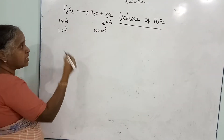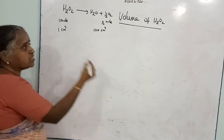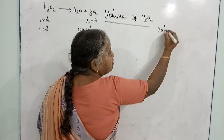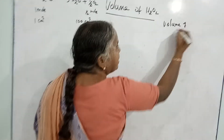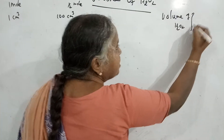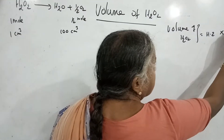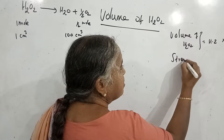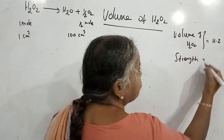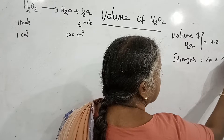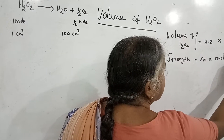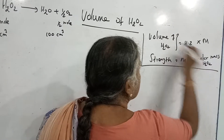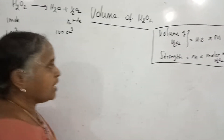This is the knowledge within the equation. The formula for this is: Volume of hydrogen peroxide is equal to 11.2 multiplied by the molarity. The second formula: Strength is equal to molarity multiplied by the molar mass of hydrogen peroxide. These two are the formulas for the calculation.